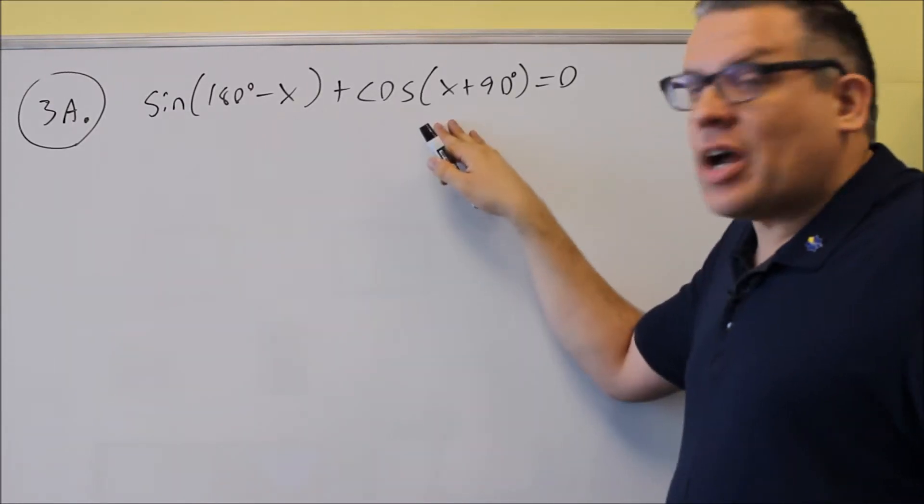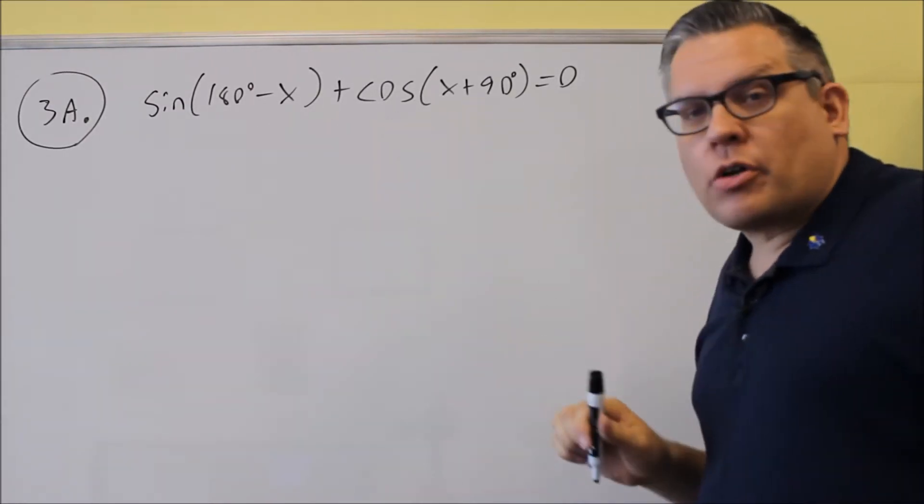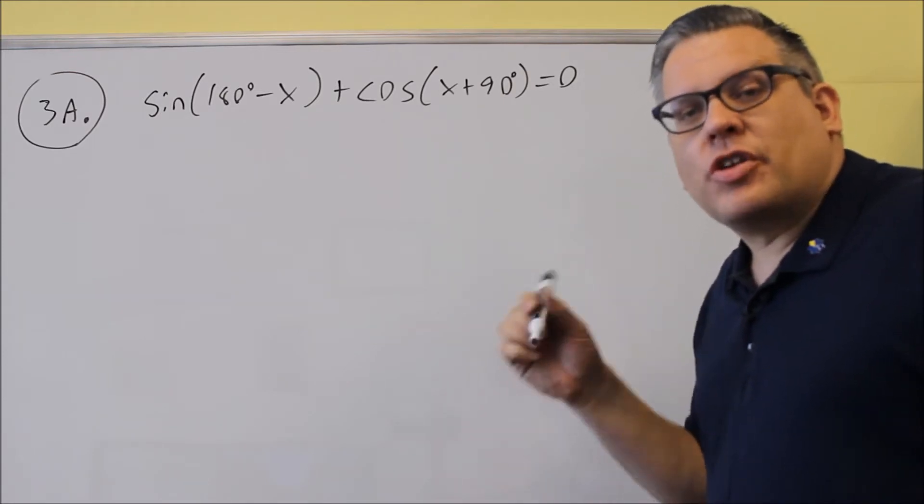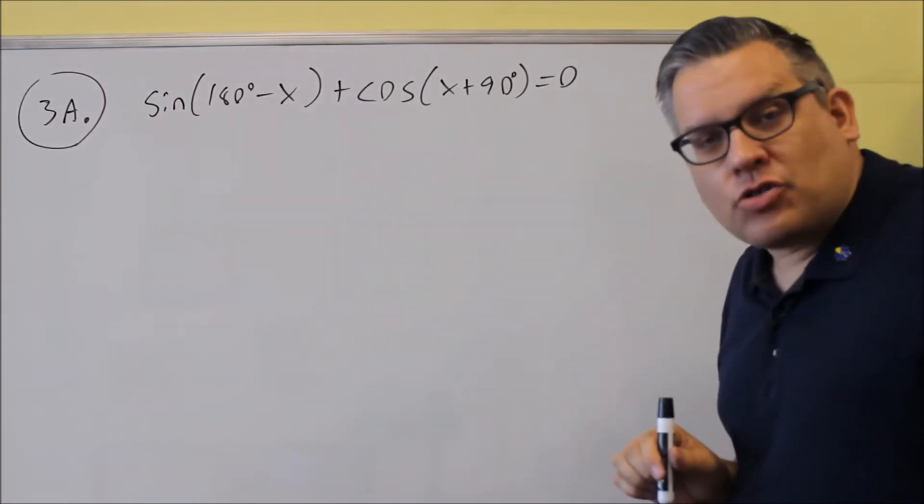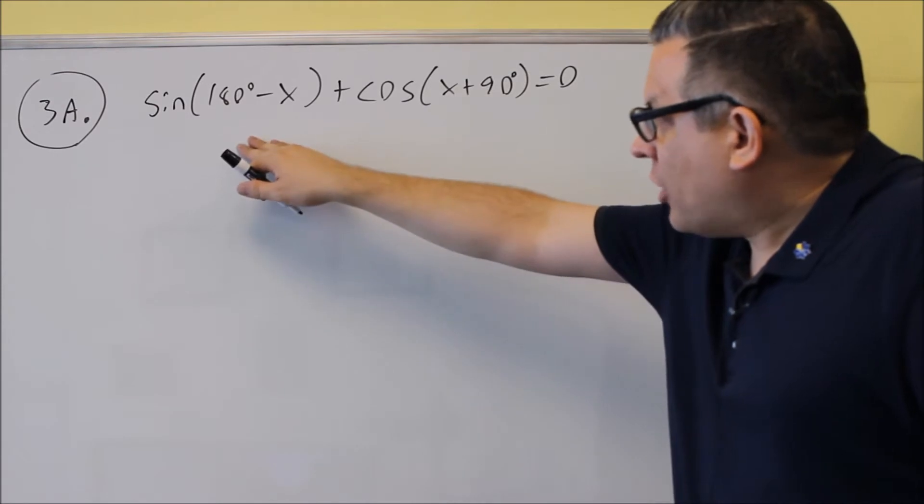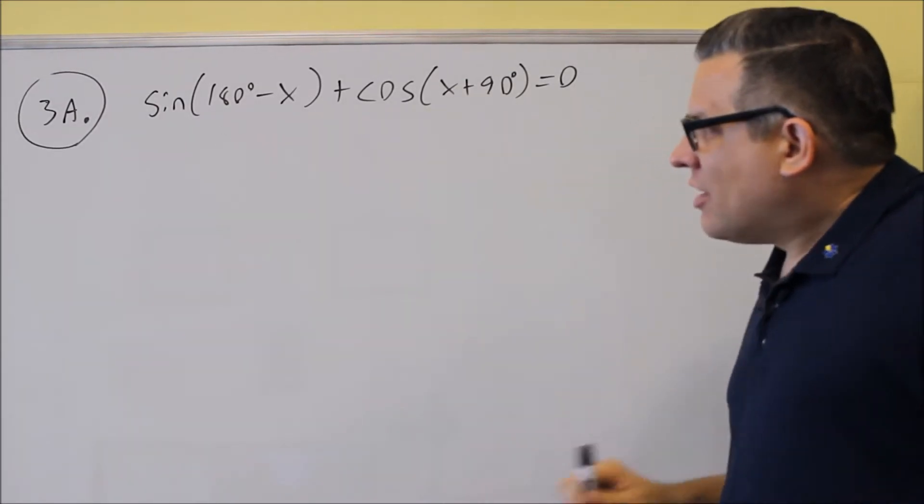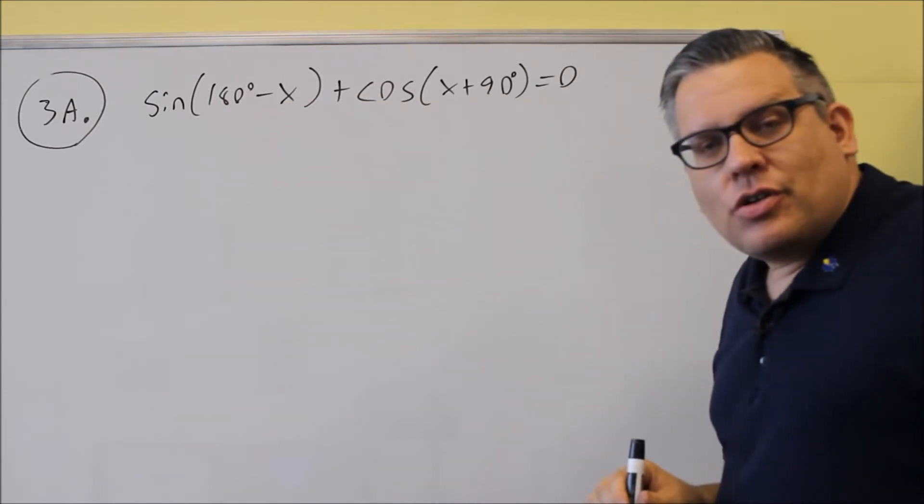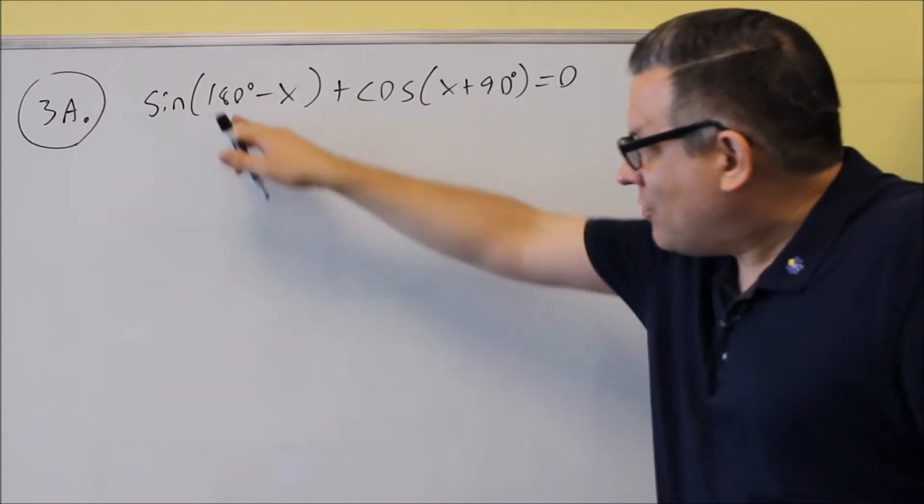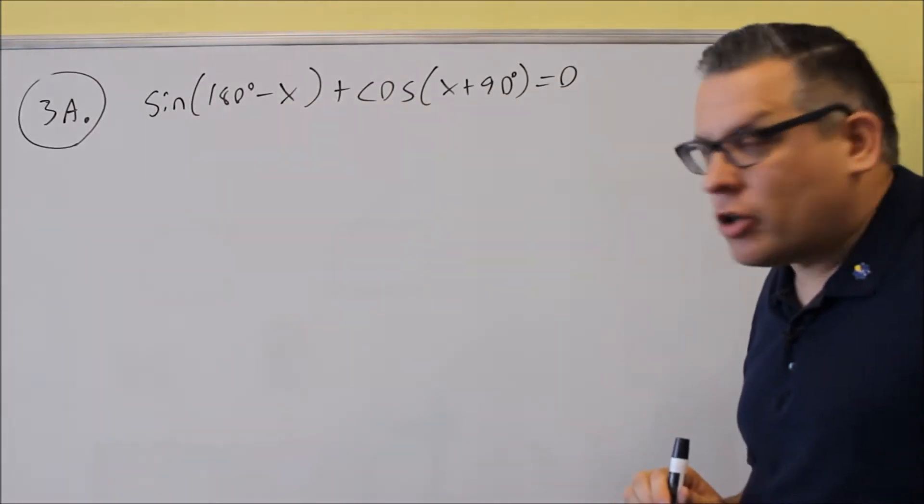Now because there's two separate trig functions, we're going to apply a separate sum and difference formula for each one. So I'll apply one for the first one and also for the second one. So for the first one I'm going to do sine of two angles being subtracted, so the difference formula for sine we're going to apply here.